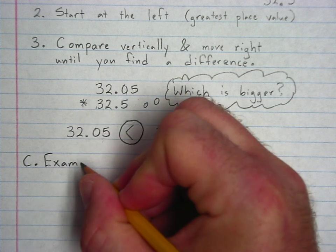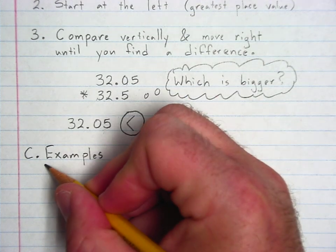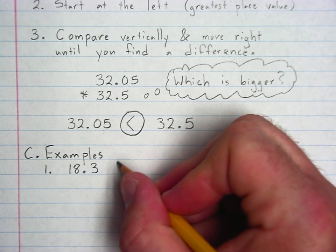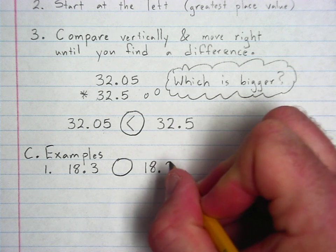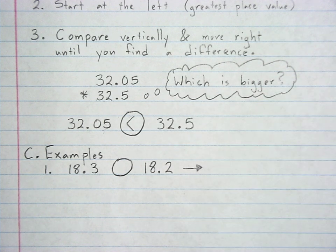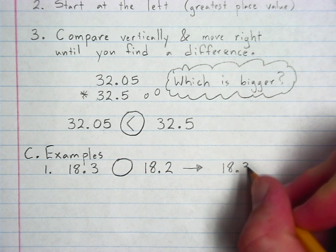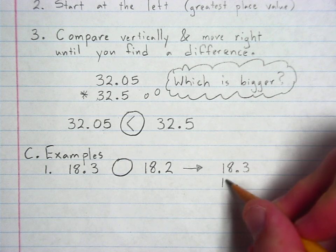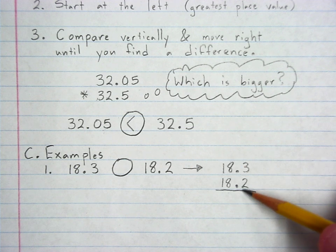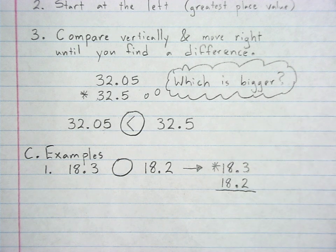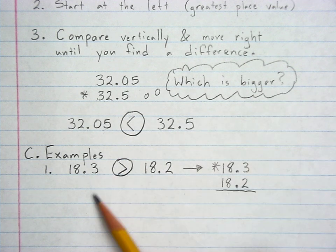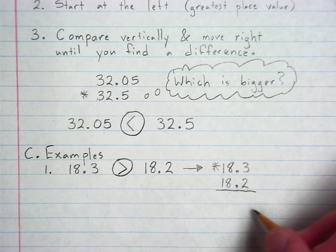But looking at our examples, let's say we're comparing 18.3 to 18.2. Some of you may already have the answer, but we're going to go through, write it vertically. 18.3. Line up that decimal. 18.2. Same. Same. Different. So, this one is bigger, which means the mouth wants to eat that one. So, it's going to open that way. Eighteen and three-tenths is greater than eighteen and two-tenths. Okay, that one wasn't bad.